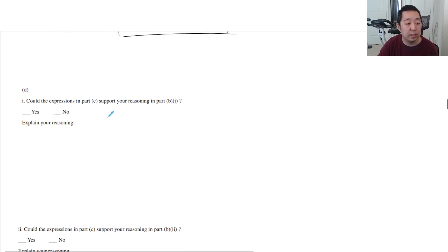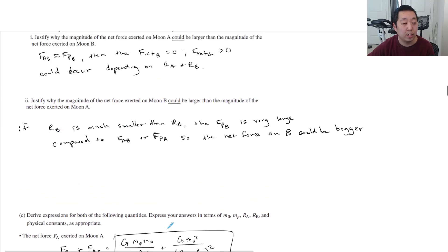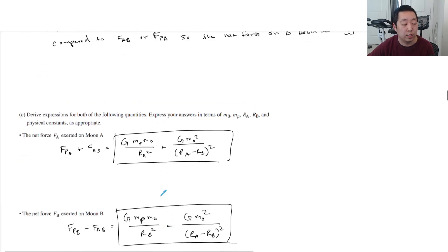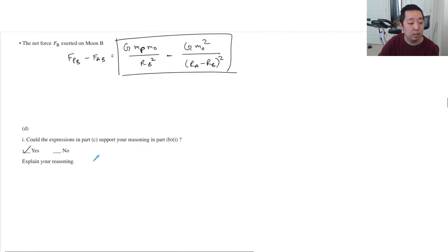Could the expression of part C support your reasoning in part BI? Well, so yes. So here, it doesn't really matter what you answered. Just whatever you stated here, you just want to match it here. You match it with your equations here. So what I said here is if FAB is equal to F, if these two forces were equal, so I would say yes, if GMP M0 over RB squared equals G M0 squared over RA minus RB squared, then the net force on B would equal zero, and the net force on A would not necessarily equal zero.